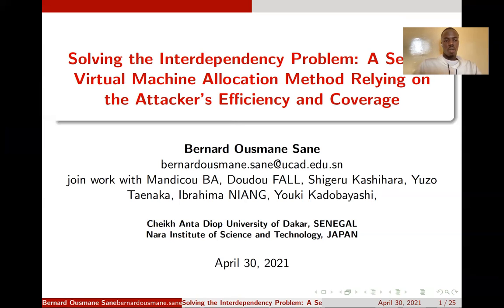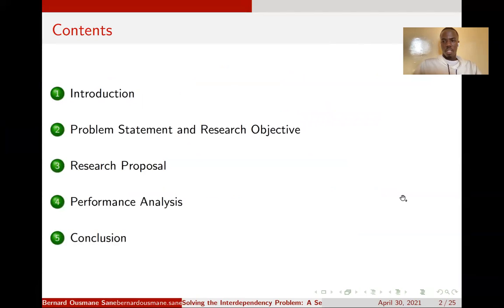I'm going to present our paper: Solving the Interdependency Problem, a Secure Virtual Machine Allocation Method Relying on Attack Efficiency and Coverage. The outline is as follows: we start with an introduction, then present the problem statement and research objective. After that, we describe our proposal before doing a performance analysis. This presentation will finish with our conclusion.